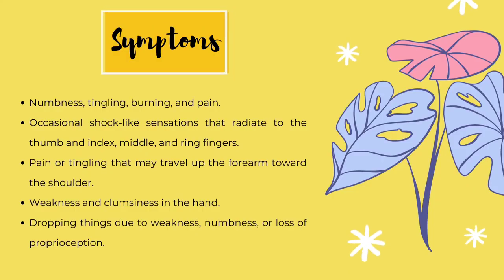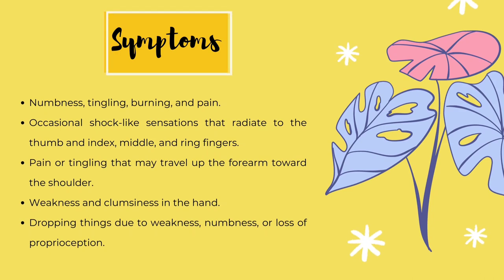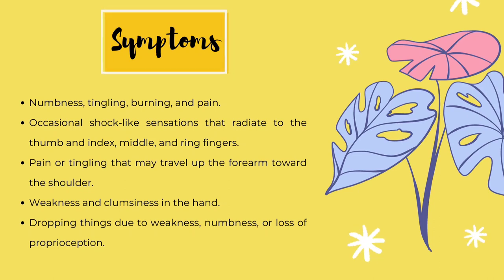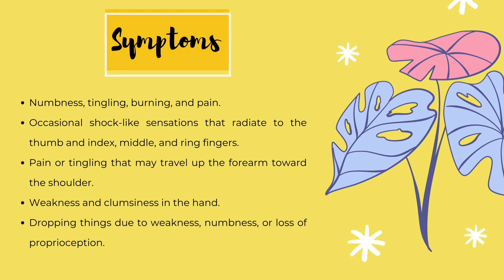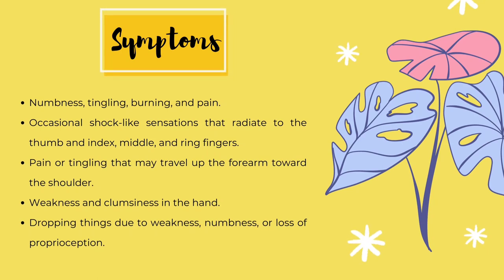Moreover, the most common complaints by patients are numbness, tingling, burning and pain primarily in the thumb, index, middle and ring fingers. Hand pain or tingling that may travel up the forearm towards the shoulder — the pain is often worse at night. Weakness and clumsiness in the hand, which may make it difficult to perform fine motor movements such as buttoning clothes. Dropping things due to weakness, numbness or loss of proprioception. Lastly, skin lesions in the territory of the median nerve are possible due to compression of the blood vessels in the carpal tunnel.